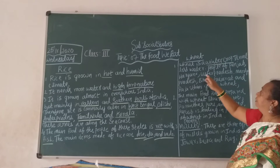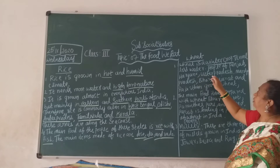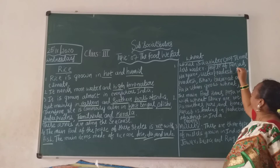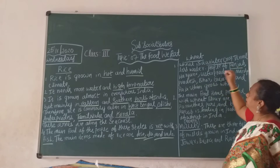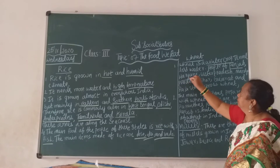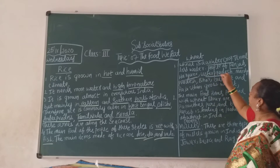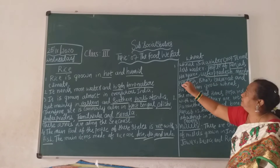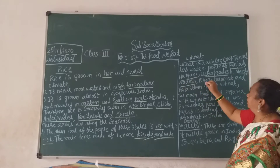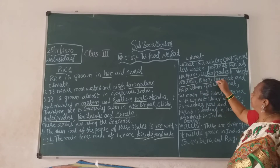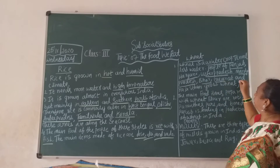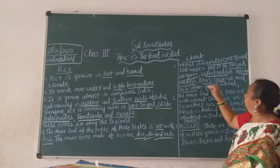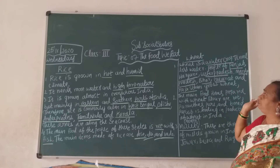People of Punjab, Haryana, Uttar Pradesh, Madhya Pradesh, Bihar, Gujarat and Rajasthan grow wheat.